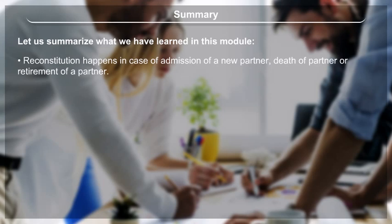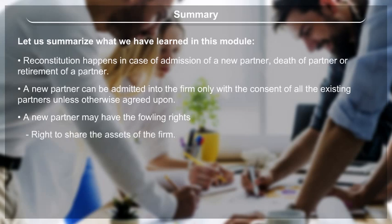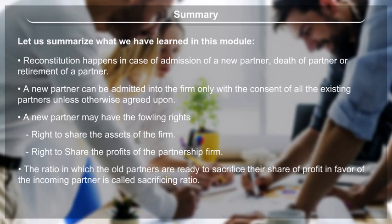Reconstitution of a firm can happen due to death of a partner or retirement of a partner. A new partner can be admitted only with the consent of all existing partners unless otherwise agreed. A new partner may have the following rights: right to share the assets of the firm, and right to share the profits of the partnership firm. The ratio in which old partners sacrifice their share of profit in favor of the incoming partner is called the sacrificing ratio.